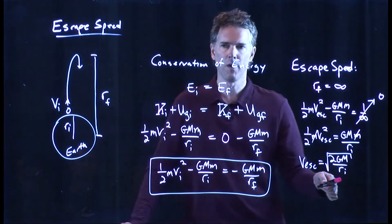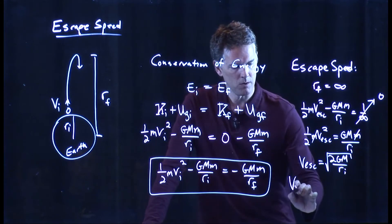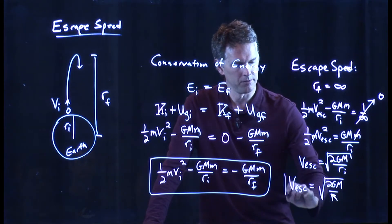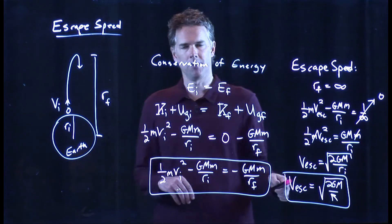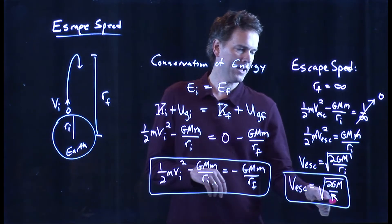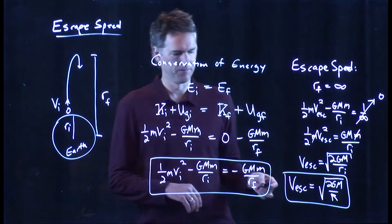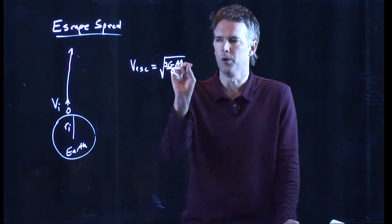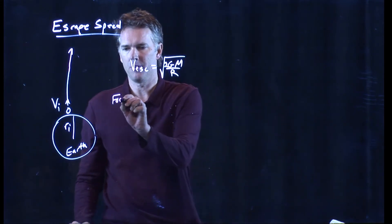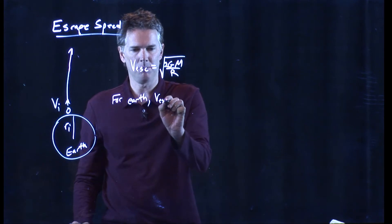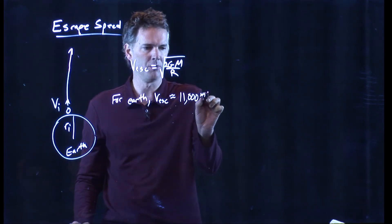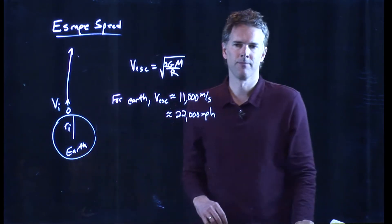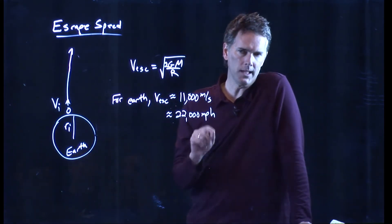R_i is the radius of the planet. So in general, for any planet, the escape speed is the square root of two times the gravitational constant times the mass of the planet divided by the radius of the planet. You can calculate this for the Earth very easily — we know the mass and radius of the Earth. For the Earth, you get v_escape somewhere around 11,000 meters per second, which is about 22,000 miles per hour. If you launch something from the Earth at that speed, it will leave the Earth and never come back.